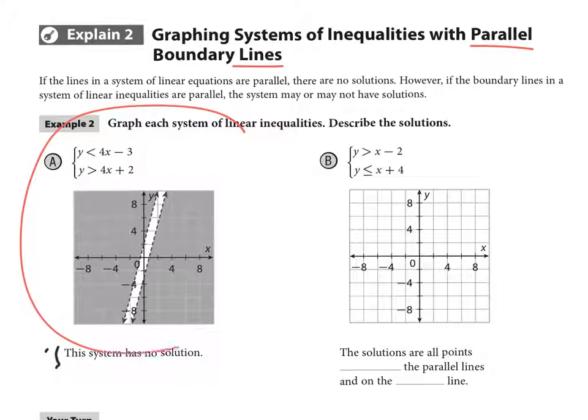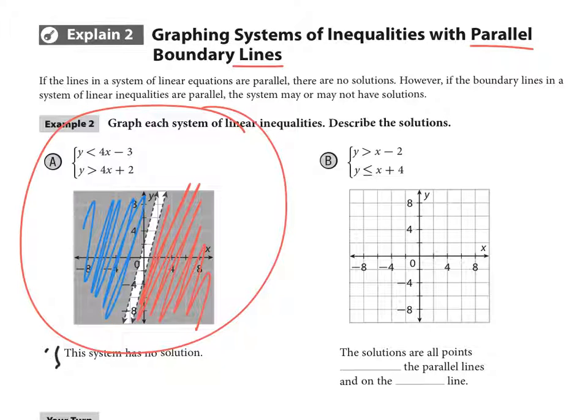Alright, in example A here, one of my lines has been shaded below. The other one has been shaded above. And because those two sections are not overlapping anywhere, there is no solution because there's no place that you're shading both lines. So this would be an example of no solution. You may want to do just a real quick rough sketch of that in your graph.